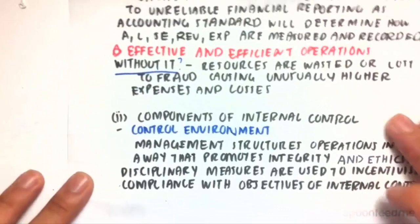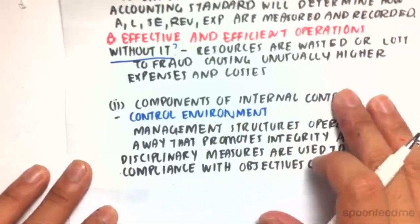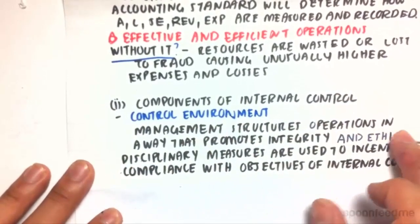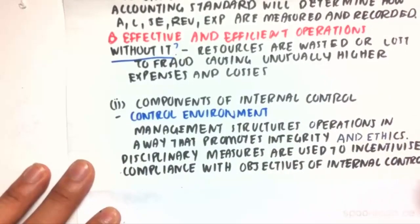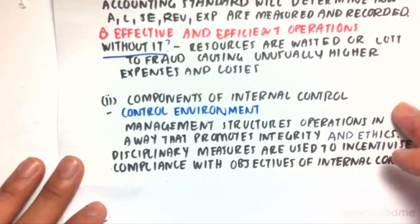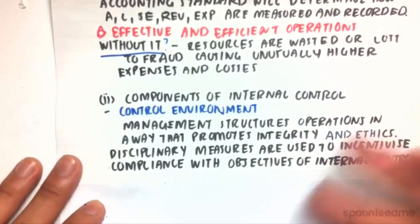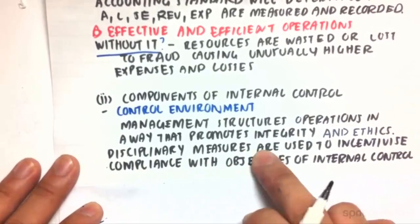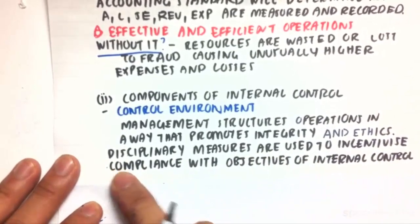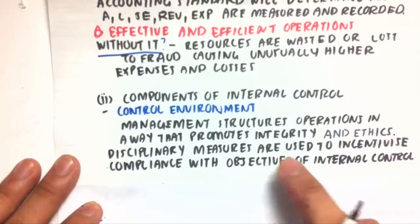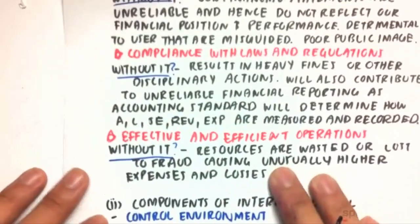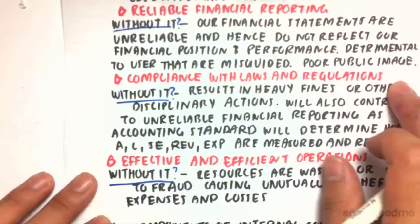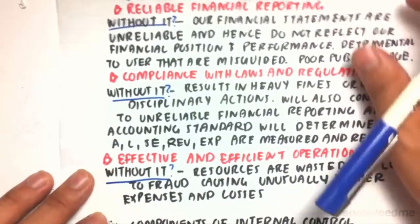So the components of internal control: firstly, to have a control environment. Management structures operations in a way that promotes integrity and ethics, so we do something that is morally right. Disciplinary measures are used to incentivize compliance with our objectives of internal control — those being reliable financial reporting, compliance with laws and regulations, and effective and efficient operations.